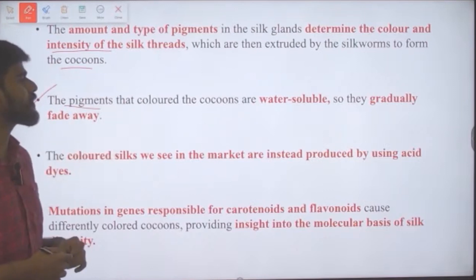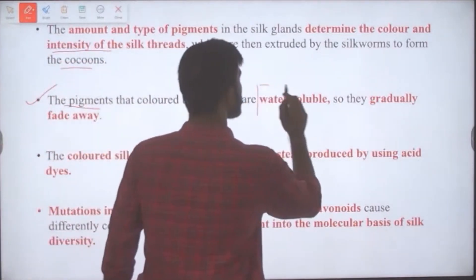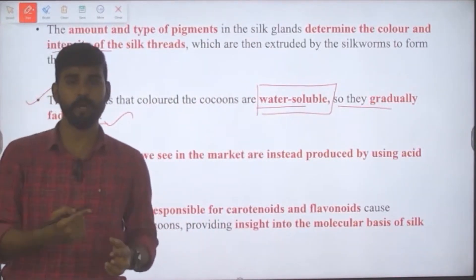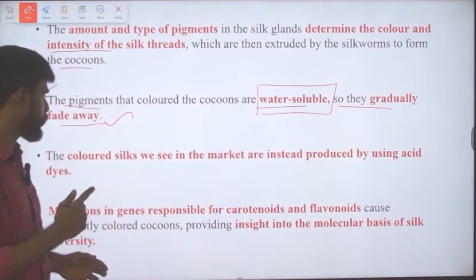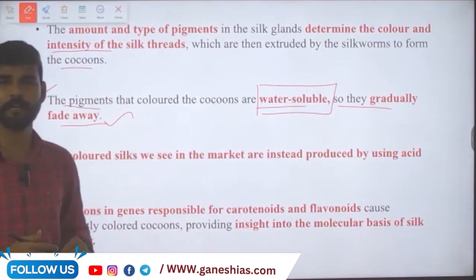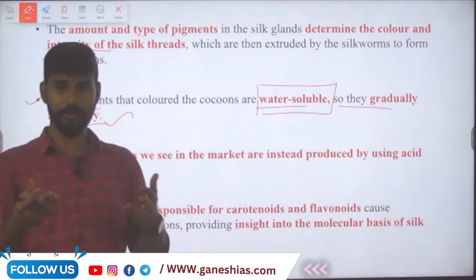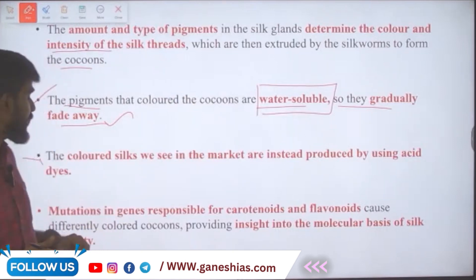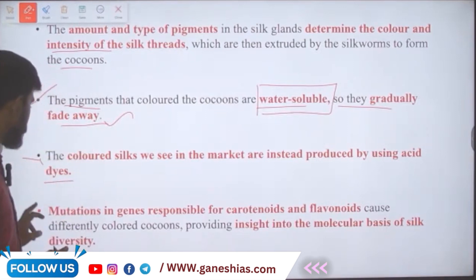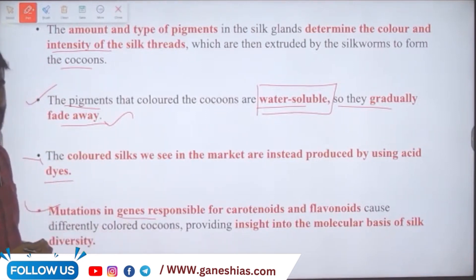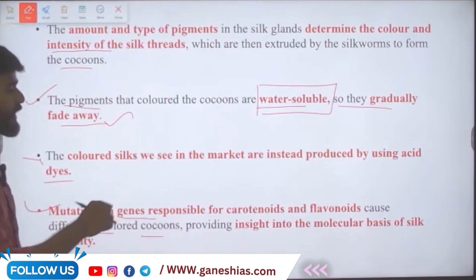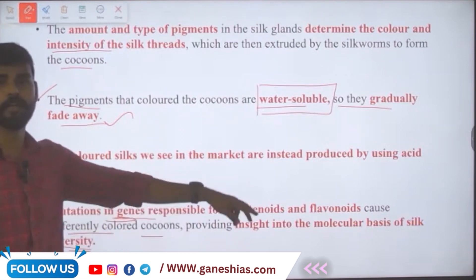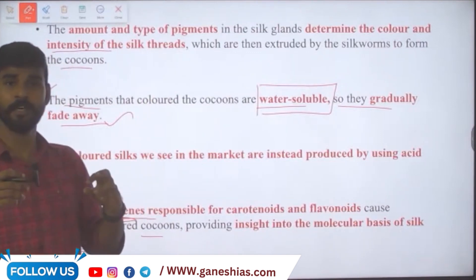The pigments that color the cocoons are water soluble, so the original cocoon color gradually fades away. This means the colored silk seen in the market today — such as silk saris — is not due to natural cocoon colors but is produced using acid dyes. Furthermore, mutations in genes responsible for carotenoids and flavonoids cause differently colored cocoons, providing insight into the molecular basis of silk diversity.